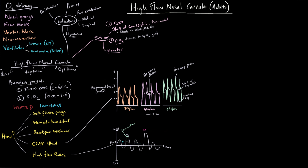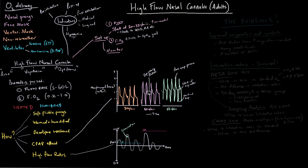Additionally, these studies measure nasopharyngeal pressure, which is only a surrogate for alveolar pressure — what we actually care about for PEEP or CPAP. Alveolar distending pressure is what opens atelectatic lung and pushes pulmonary edema out; nasopharyngeal pressure may not reliably reflect that. There probably is some positive pressure effect from 50–60 liters per minute blown into someone's face, but I would be cautious calling it true PEEP or CPAP. We tend to call it a "CPAP effect" rather than true CPAP.